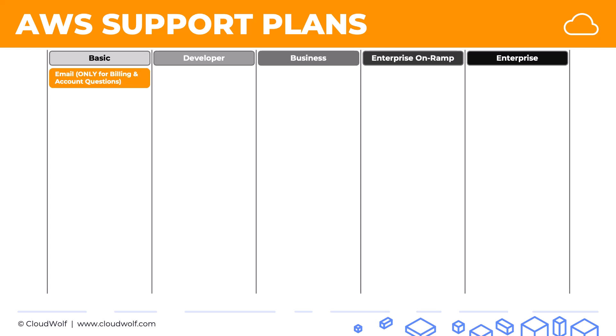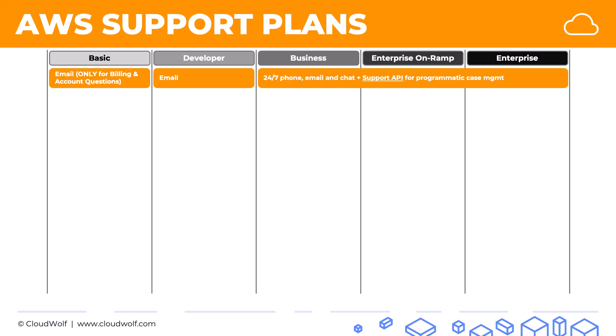With the basic plan you only get email support, and that is only for billing and account questions — no architectural guidance is provided here. With the developer plan you get email support, and with the other three plans you get 24/7 phone, email, and chat support. Plus, importantly for the exam, you get access to a support API for programmatic case management.